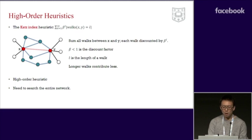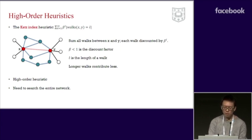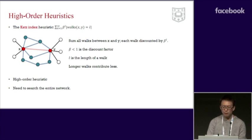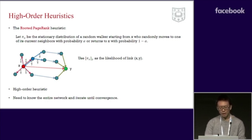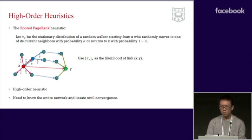Let's see some high-order heuristics. The Katz index sums all the walks between x and y, where a longer walk is discounted more than a shorter walk. It is high-order because one needs to search the entire network to find all the walks between x and y. Another popular high-order heuristic is rooted PageRank, which uses the stationary distribution at node y of a random walker who randomly returns to node x as the likelihood of link xy. Generally speaking, high-order heuristics have better performance than first and second-order heuristics.